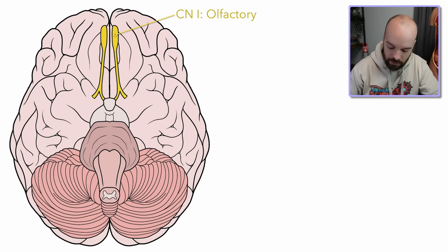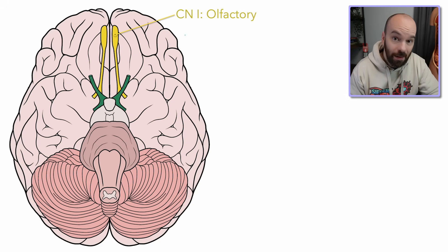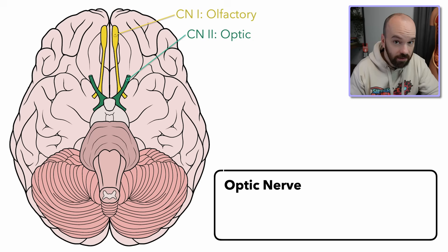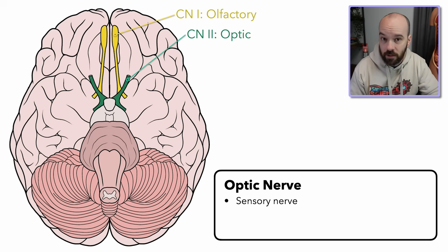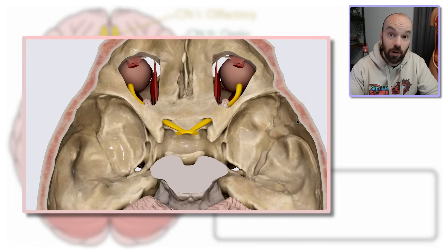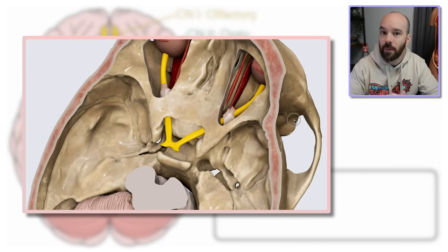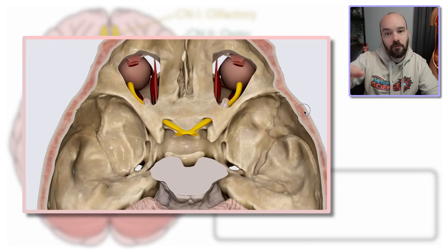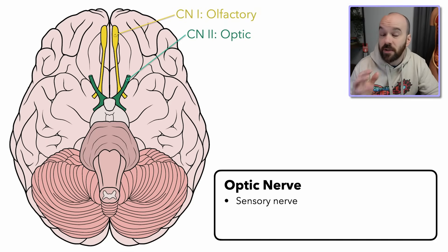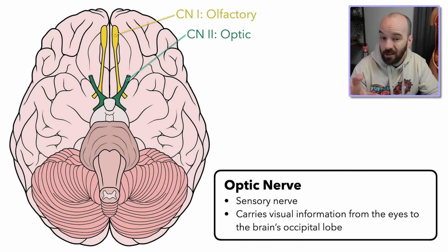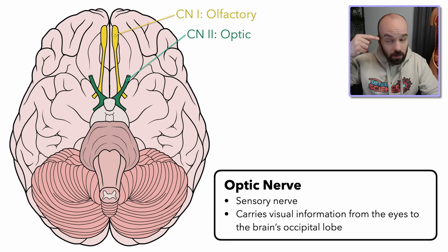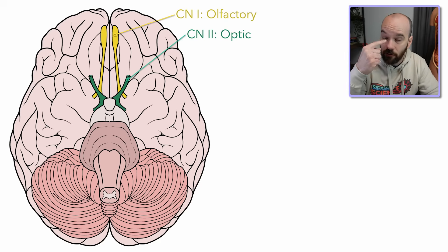We've actually got three O's to start. We've got the olfactory. Up next, we have the optic nerve, which is going to be another sensory nerve — this one's about vision. Optic or optical, of course, refers to the eye. It's sensory only; it's not going to move the eye. The optic nerve sends signals from the eye's retina and a couple of other structures through the optic nerve back to the occipital lobe in the back of the brain.